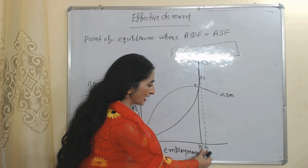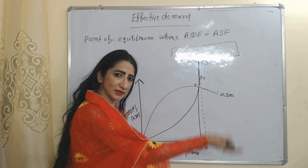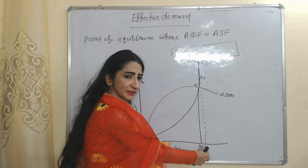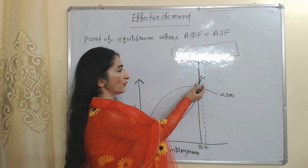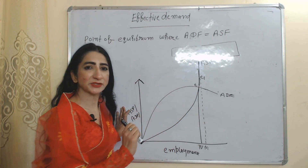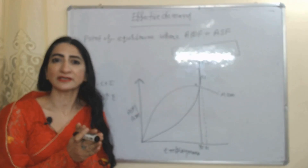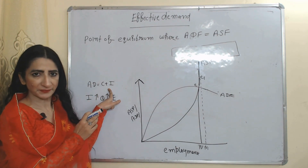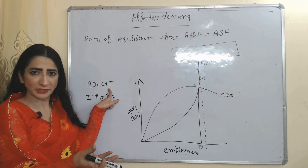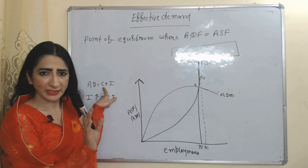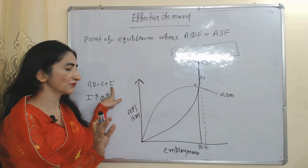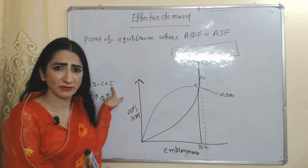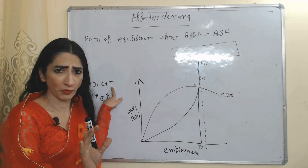At the effective demand point E, there are still workers unemployed, because the full employment point is E1. That is why we need to increase aggregate demand. Aggregate demand depends on consumption and investment. Since this theory is based on the short-run period, we cannot increase consumption in the short run, so we need to increase investment. Initially, the private sector will not invest because there is no scope for profit.